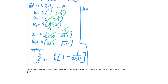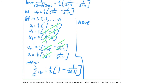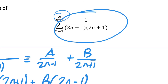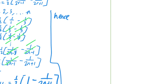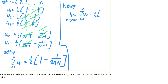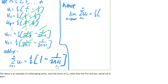Hence, because the original series went to infinity rather than n, we look at the limit as n tends to infinity. So the limit as n→∞ of sigma u_r from r=1 to n equals one half times [1 minus 1/(2n+1)]. As n becomes very large, 1/(2n+1) goes to zero.